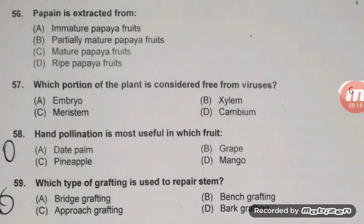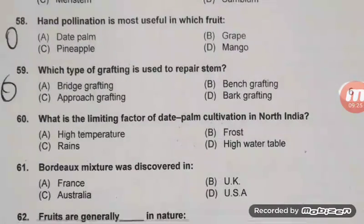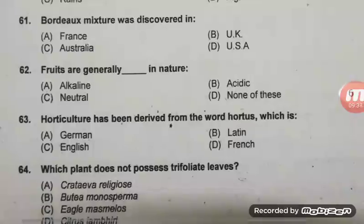Hand pollination is most useful in which fruit? Right answer is date palm — A. This question is also repeated. This type of graft used to repair stem — right answer A, bridge grafting. What is the limiting factor of date palm cultivation in North India? Right answer C — rain.